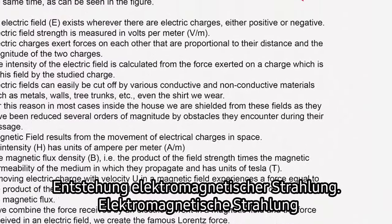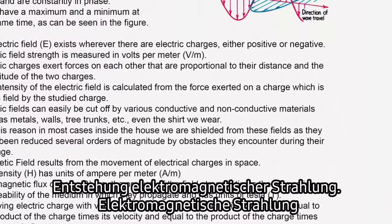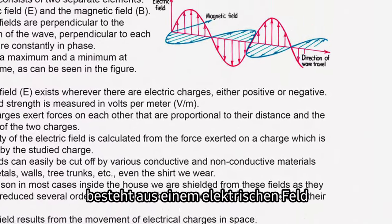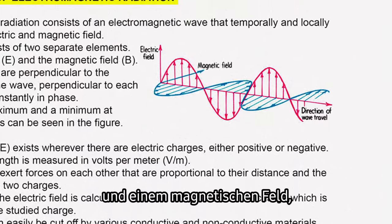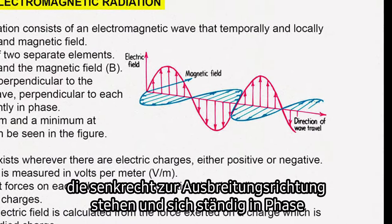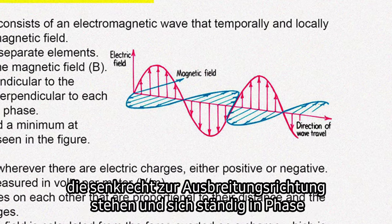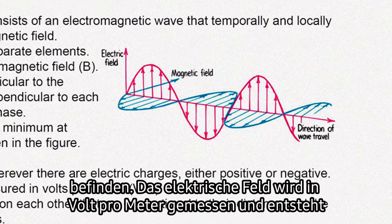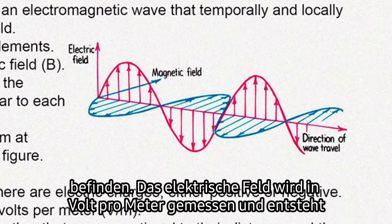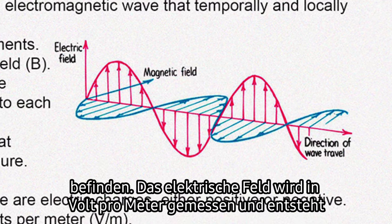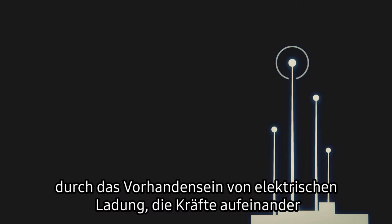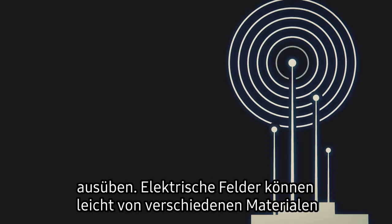Entstehung elektromagnetischer Strahlung. Elektromagnetische Strahlung besteht aus einem elektrischen Feld und einem magnetischen Feld, die senkrecht zur Ausbreitungsrichtung stehen und sich ständig in Phase befinden. Das elektrische Feld wird in Volt pro Meter gemessen und entsteht durch das Vorhandensein von elektrischen Ladungen, die Kräfte aufeinander ausüben.